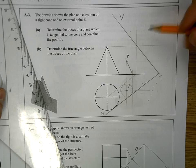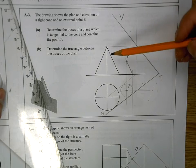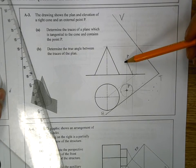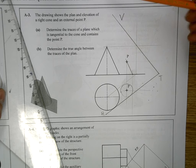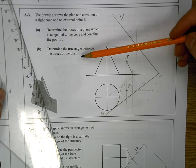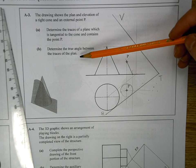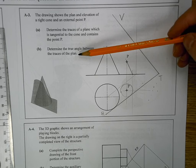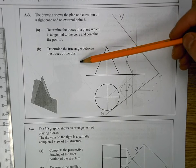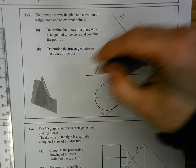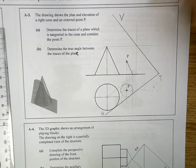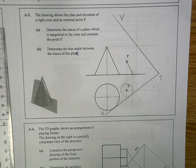Okay, so that would be a plane, the traces of a plane that contains that cone and point P. Part B is something similar to what we came across yesterday. We're looking for the true angle between the traces of the plane.